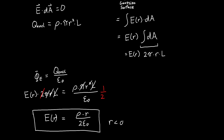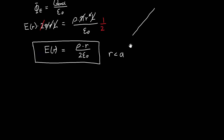The π's cancel, one of the r's cancels, and — thank goodness — the l cancels. Dividing both sides by 2, we get our electric field inside the cylinder: E(r) = ρr / (2ε₀). So the electric field increases linearly as we go further from the center while inside the cylinder, because we're capturing more and more charge.